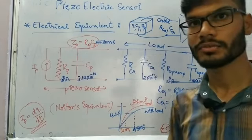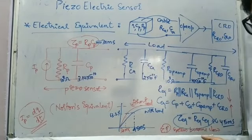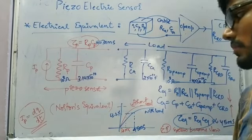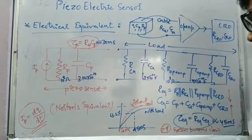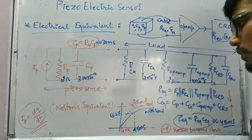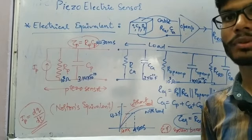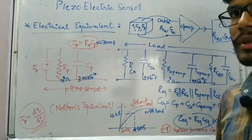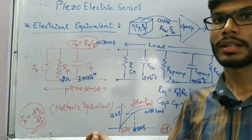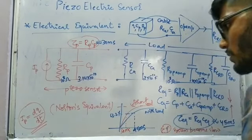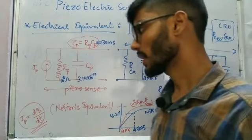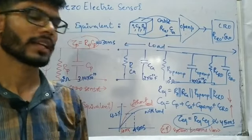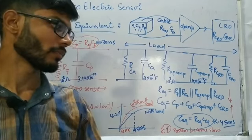Without any load in ideal condition the time constant was 30 milliseconds, and with load it is 45 milliseconds. A higher time constant means the system takes more time to reach 63.25% of its final value, so the system response becomes slower. An ideal sensor has a lower time constant; adding load increases the time constant and slows performance.